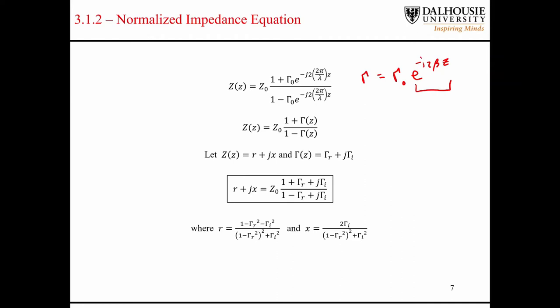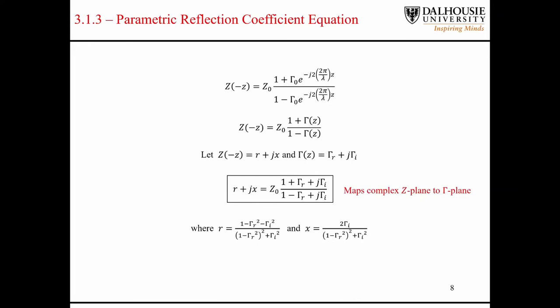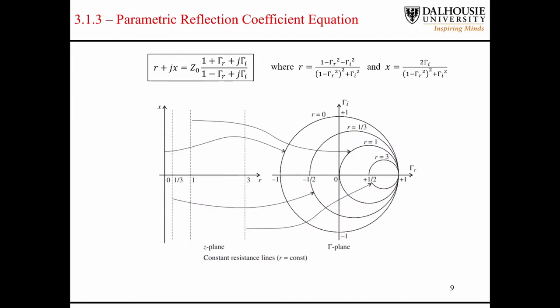If we let the impedance equal a real and imaginary part, and we let the reflection coefficient equal a real and imaginary part, then we can rewrite the equation for the impedance — the real part is given by one expression and the imaginary part by another. This is a complex mapping from the z-plane to the reflection coefficient plane, where every point on the z-plane is a complex number with a magnitude and an angle, and those points get mapped to points on the reflection coefficient plane.